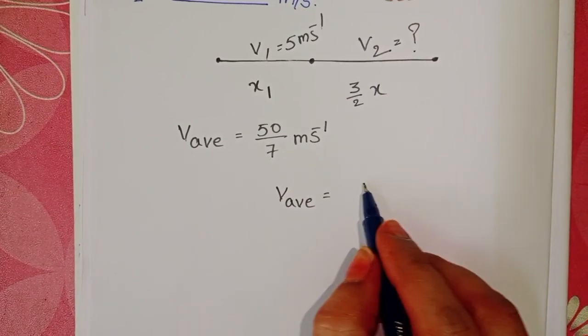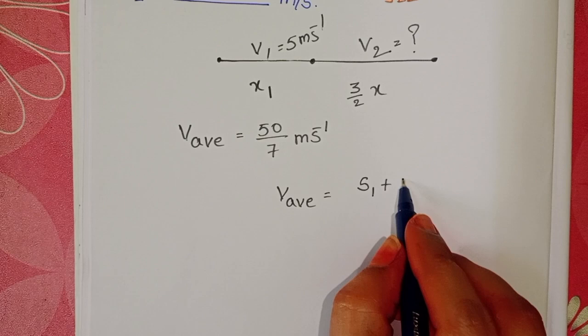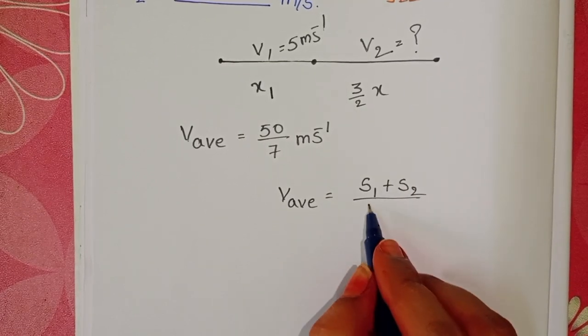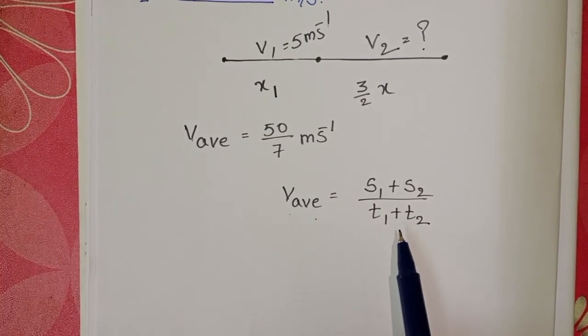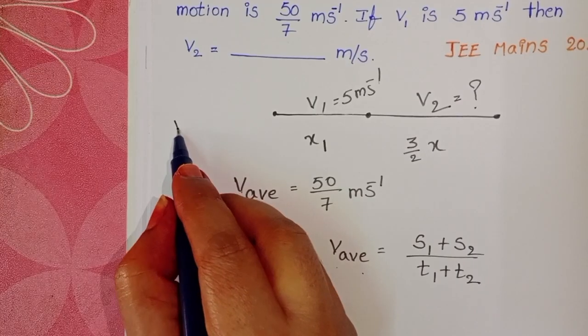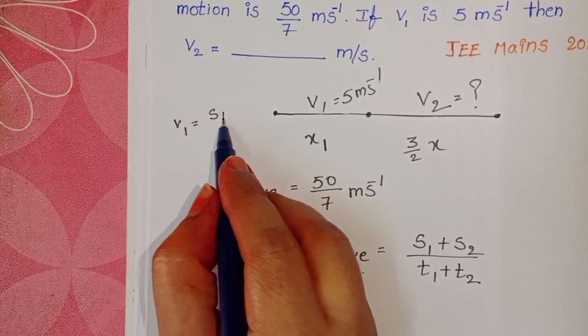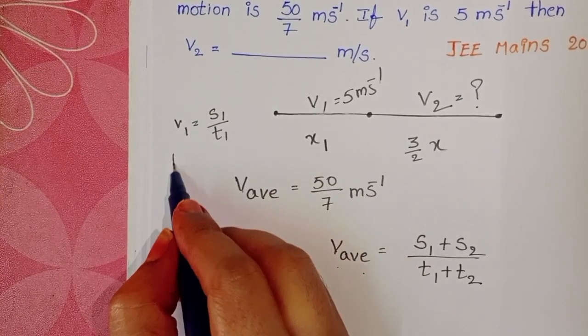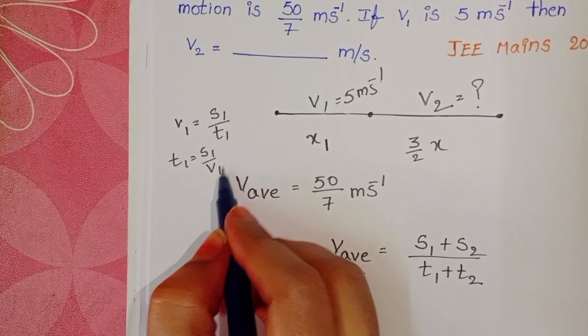Average velocity equals total distance by total time taken. But here we don't know the time taken by the person. v1 equals s1 by t1. From this, t1 equals s1 by v1.